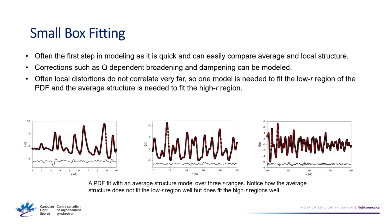In a small box fit, you can refine over different length scales. For longer length scales the fit is typically quite good, but at shorter ranges you often see problems with peaks that don't fit well — this is common when there are local deviations from the average structure that average out over longer ranges. A lot of times you'll refine different length scales with different models, or the same model over different ranges, and observe very different fits. This approach is called boxcar modeling.